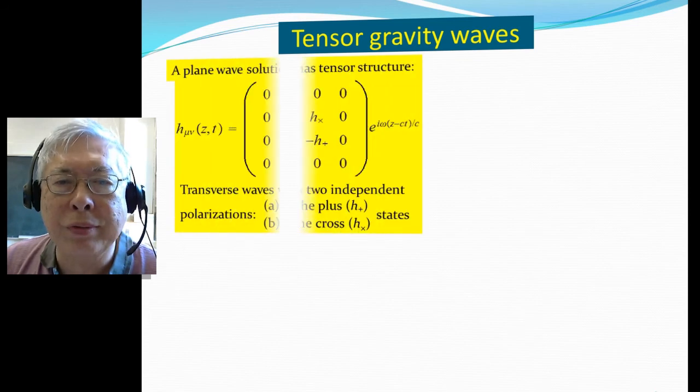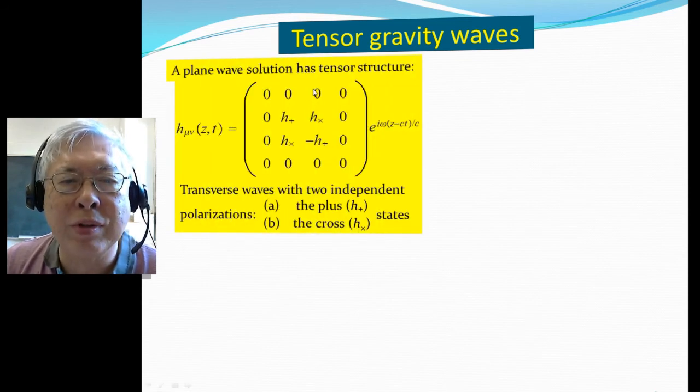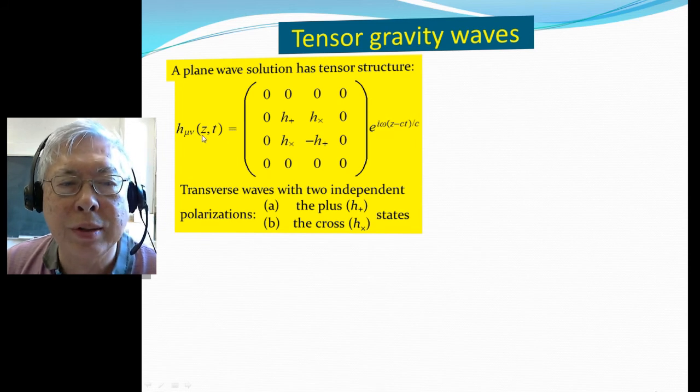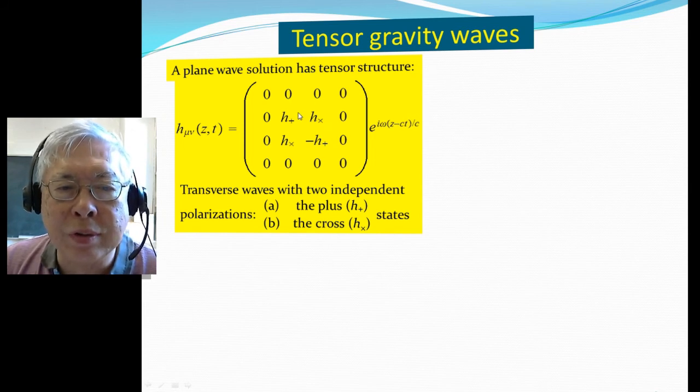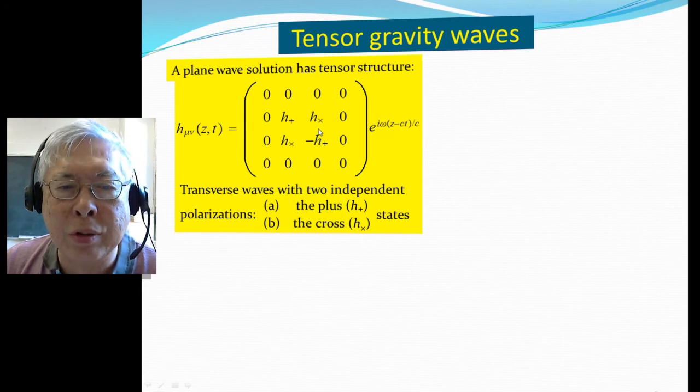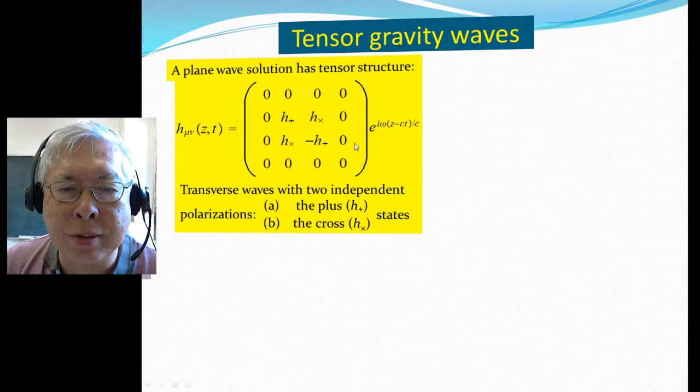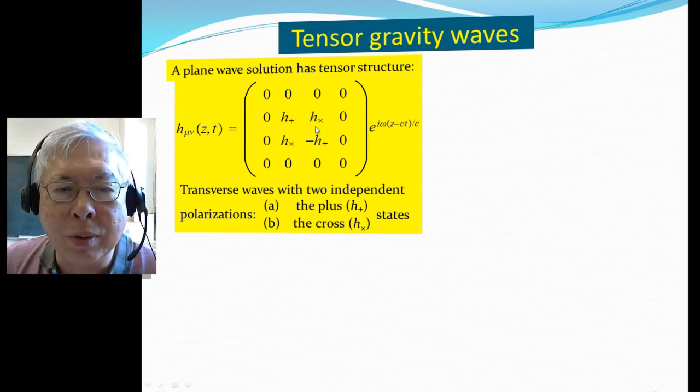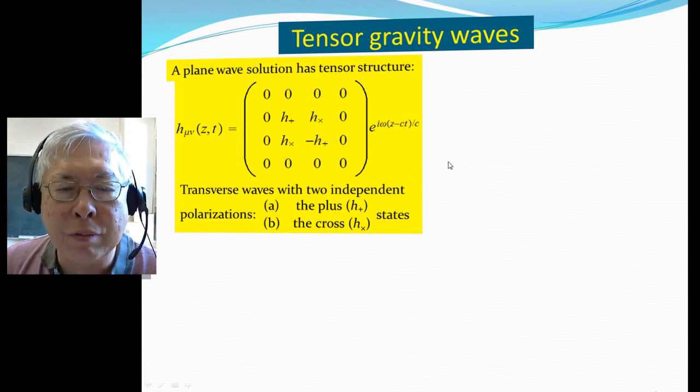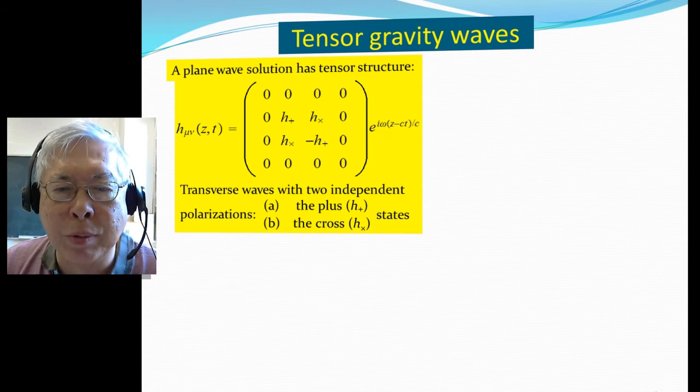But gravitational wave is a tensor wave, meaning for a plane wave solution propagating in the z direction, the polarization factor now becomes a 4x4 matrix. The polarization is transverse because it only has the xy direction, and has two independent elements: one I call h_plus, the other is h_cross. These are two independent polarization states. Remember, all massless particles, no matter what spin they have, have two independent polarization states.